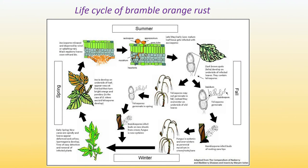Later on, the secia will develop on the underside of the leaf, appearing waxy at first, then turning bright orange. The aeciospores will be released and dispersed by wind and splashing water. During summer, in late May or early June, the mature leaves will be infected by the aeciospores, and you can observe dark brown spots on the underside of the mature leaf. From there, teliospores will be produced.